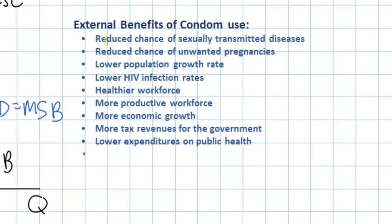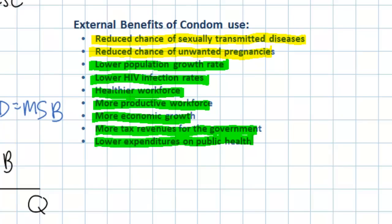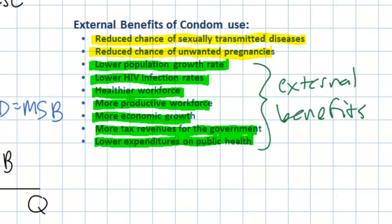We should see right away that some of these benefits are enjoyed by the users of condoms themselves, such as a reduced chance of sexually transmitted diseases and a lower chance of unwanted pregnancies — these are the highlighted private benefits. However, the other benefits are more likely to be enjoyed only by society as a whole: a lower population growth rate, lower HIV infection rates leading to a healthier and more productive workforce, more economic growth, more tax revenues for the government, and lower government expenditures on health. All of these are external benefits which may not be realized by the private consumers of condoms themselves.